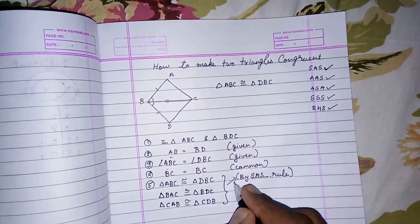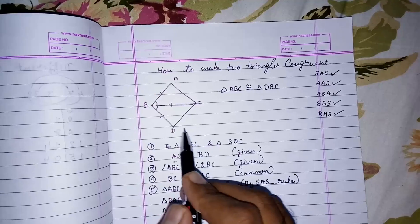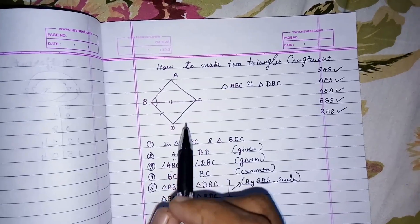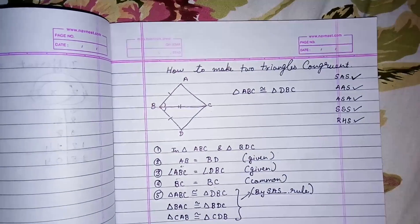All are by this method only. Whatever vertex we are using here, we have to use the same vertex of the opposite triangle. Thank you.